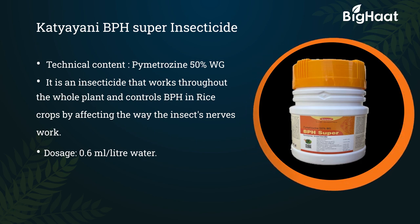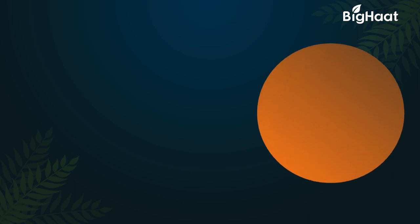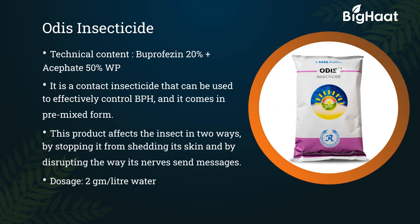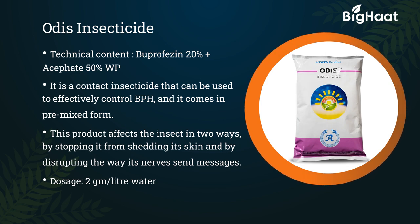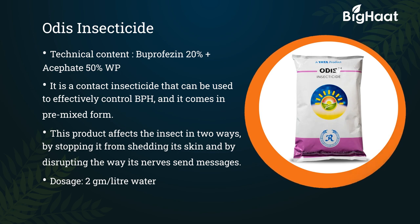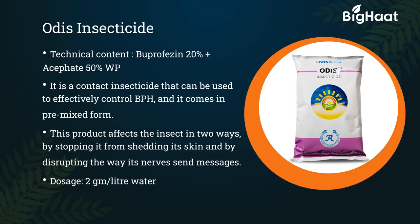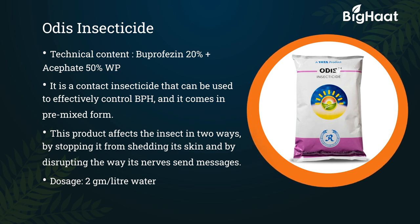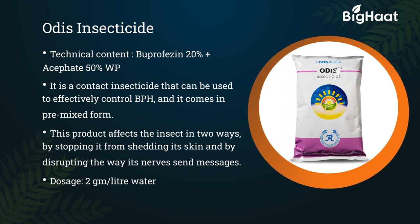Odys insecticide — its technical content is buprofezin 20% plus acephate 50% WP. It is a contact insecticide used to effectively control BPH, available in a pre-mixed form. It affects the insect in two ways: by stopping it from shedding its skin and by disrupting the way its nerves send messages. Its dosage is 2 grams per liter of water.